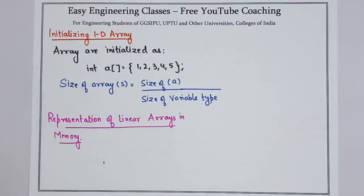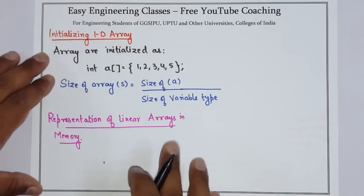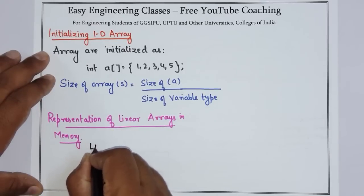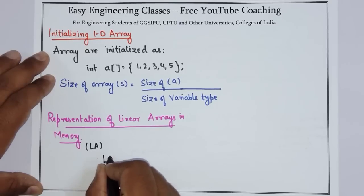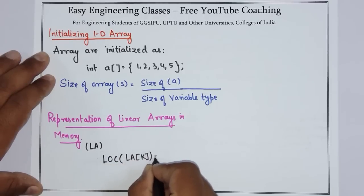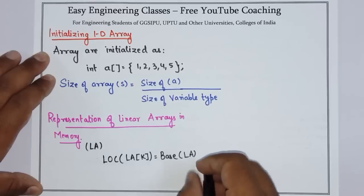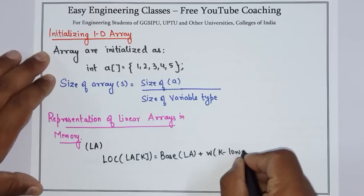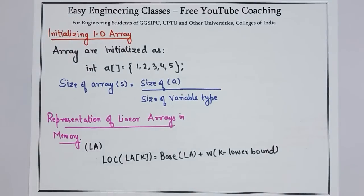In this topic you have to remember one formula — a method to find the address of any array element. Suppose the array is LA. The formula is: location of the kth element of the array equals the base address of the array plus W multiplied by (k minus lower bound). This is the formula you have to remember.